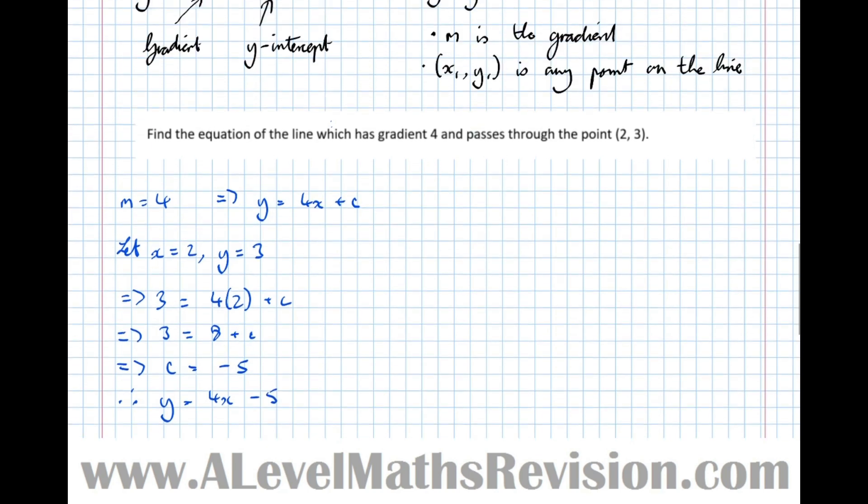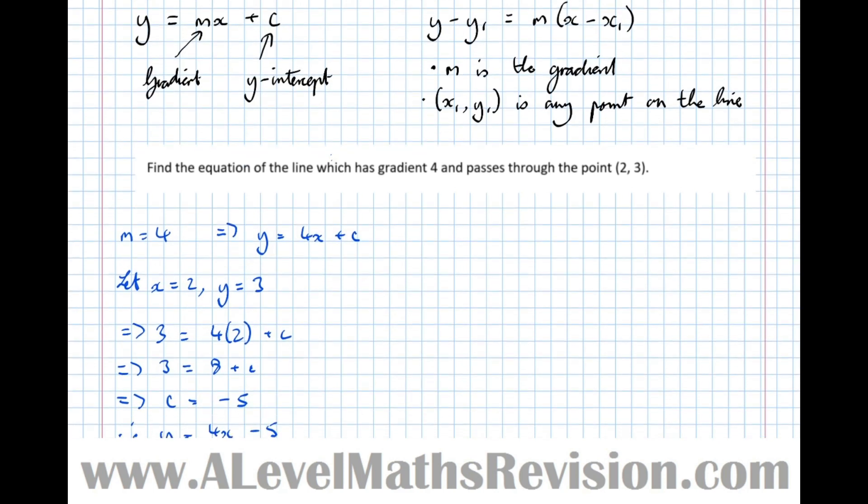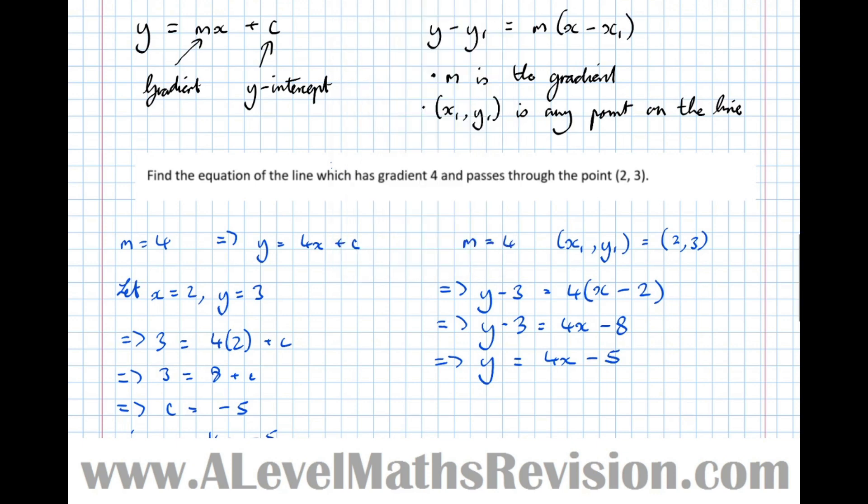I think that's a bit long-winded. Let's try the other formula, y minus y1 equals m times x minus x1. The gradient's 4, and the point on the line is 2, 3. So y minus 3 equals 4 times x minus 2. Multiply the bracket out: y minus 3 equals 4x minus 8. Add 3 to both sides to get y equals 4x minus 5. We've done it in just a little bit less working. This way is the way to do it. That's one that will be introduced at A-Level and your teachers will expect you to use, because it is far superior.